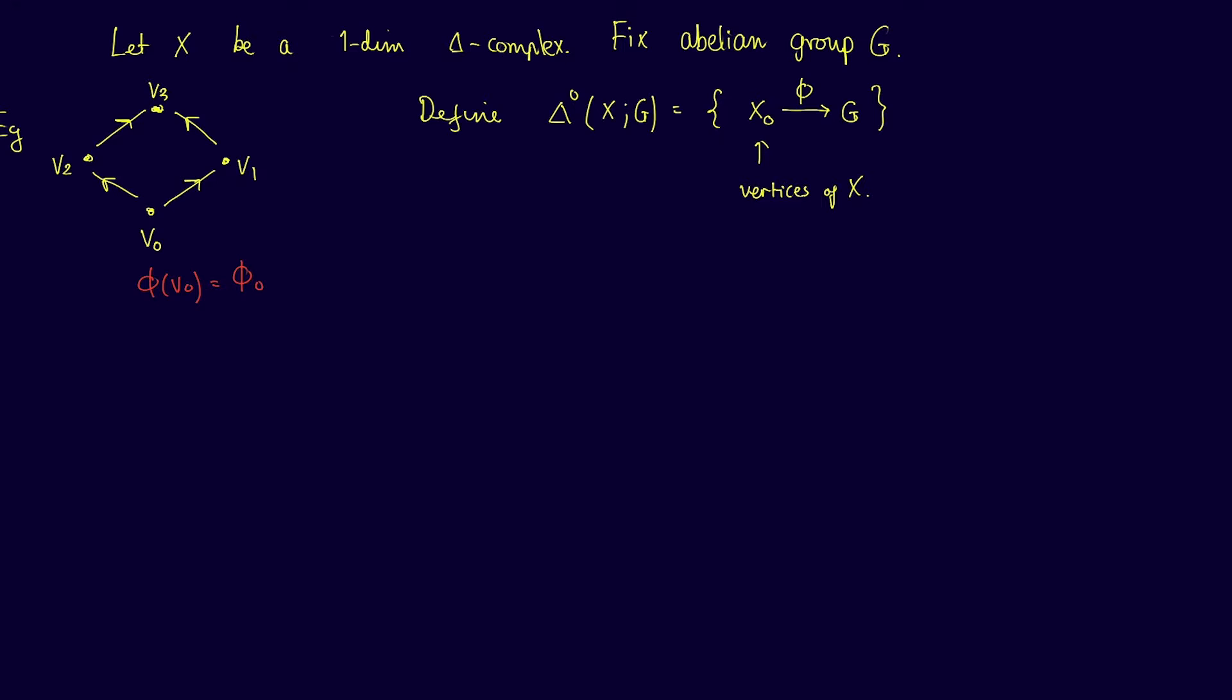Since there are no restrictions on these choices, we see that Δ⁰(X;G) is isomorphic to the direct product of some number of copies of G, one copy for each vertex of X. At this point we already have some algebraic structure on the space X. For example, we can now make sense of v₁ minus v₀ by interpreting it as φ₁ minus φ₀ in G for some φ in Δ⁰(X;G).